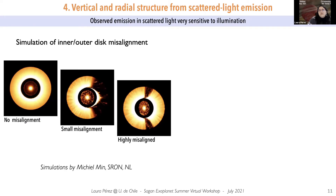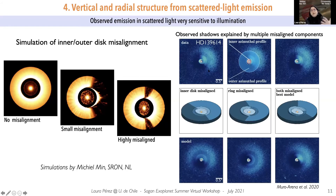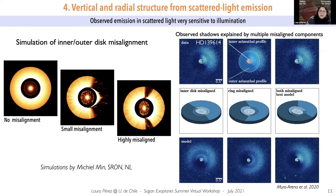The fourth example is that we can constrain the vertical and radial structure from scattered light emission, because the emission is very sensitive to illumination from the central star. If you have an inner disk that is misaligned with the outer disk, you might start seeing shadows because some of that inner disk blocks emission from the central star. There are beautiful observations where you need to add complexity into the radial and vertical structure — for example, not only an inner disk misaligned but also a ring misaligned with both the inner disk and the outer disk — to explain what is happening.